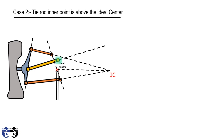The second case is when the tie rod is placed above the ideal center by distance x. When the tire hits a bump, the tie rod rotates about this point while the suspension linkages rotate about the instantaneous center. This causes the tire contact point to shift horizontally, moving towards the left to reach the ideal center line, and this effect causes the tire to steer towards the right direction.